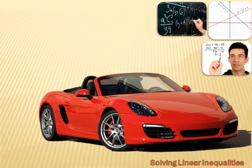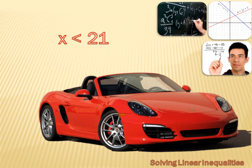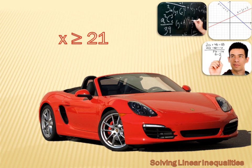There are four inequality symbols you'll need to remember. The first is x is less than 21. The smaller end of the less than symbol points towards the smaller number, and the larger end towards the larger number. Then there's x is less than or equal to 21 — we add a little equal sign below the less than symbol. And there's x is greater than or equal to 21, or x is greater than 21.